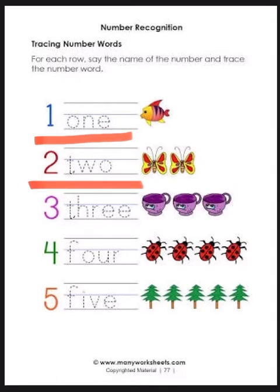Now two: T-W-O, two. T-W-O, two. Now the third is three: T-H-R-E-E, three. T-H-R-E-E, three.